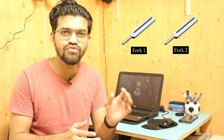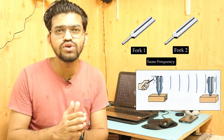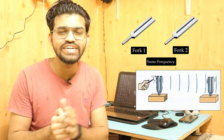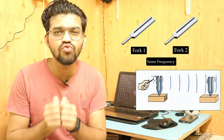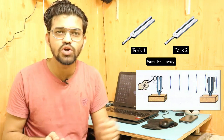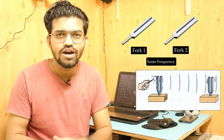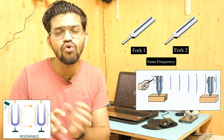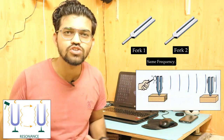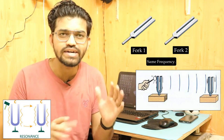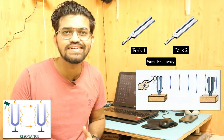Suppose I have two identical tuning forks — fork one and fork two. If I set these two forks at the same frequency and tune the vibrations in fork one, and fork two is idle, the frequency or vibrations produced by fork one will be induced in fork two very easily. Fork two will also resonate at that same frequency. If we stop the vibrations in fork one, fork two will also produce the same kind of vibrations. This phenomenon is called resonant frequency — resonance gets induced in fork two from fork one.